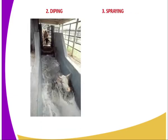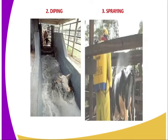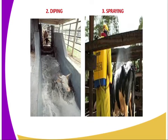The second method is dipping, which is aimed at controlling external parasites, where chemicals such as a caricide are used. Then we have spraying, where a caricide is also used, but in spraying you can use the hand spraying method.